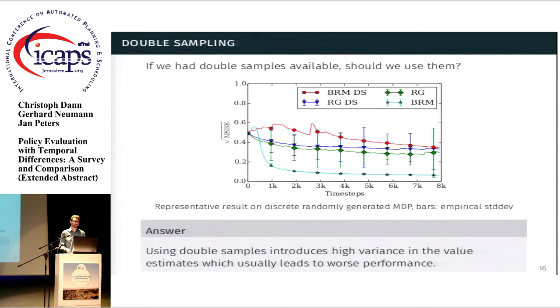A different issue that we looked at is the double sampling issue. Remember that in order to get an unbiased estimate of the mean squared Bellman error, you need to have a second set of samples, which is usually not available.